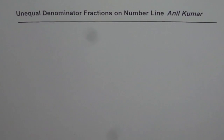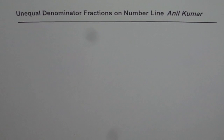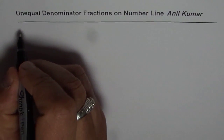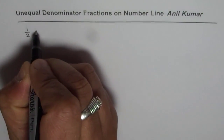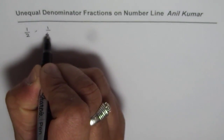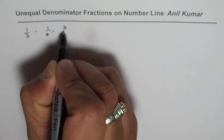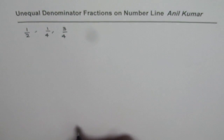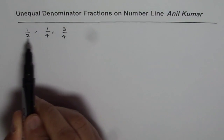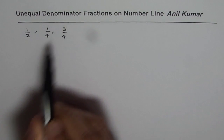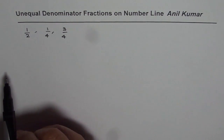I am Anil Kumar and we will understand how to represent unequal denominator fractions on a number line. Let me begin by taking a few examples. Let us say we have fractions 1 over 2, 1 over 4, and 3 over 4. The question is to show these fractions on a number line. How can you do this?